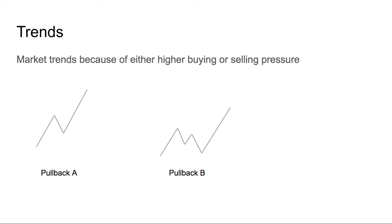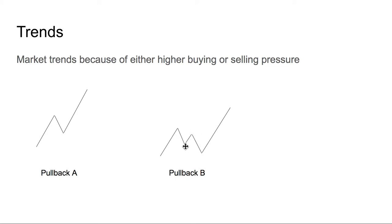There are two major types of pullbacks we generally see in the markets. One is more straightforward: an up move, a pullback, then trend continuation. The other is more complex: the stock goes up, pulls back, tries to go up again but pulls back again — this is more of a shakeout. People buying on the first and second moves get stopped out, and when the trend finally resumes you see a much bigger push.